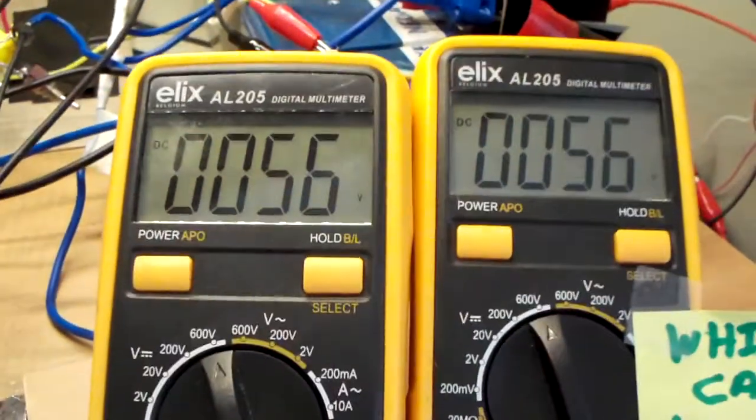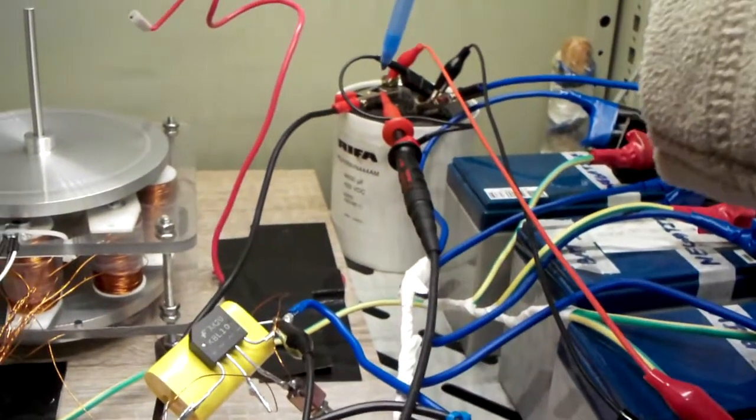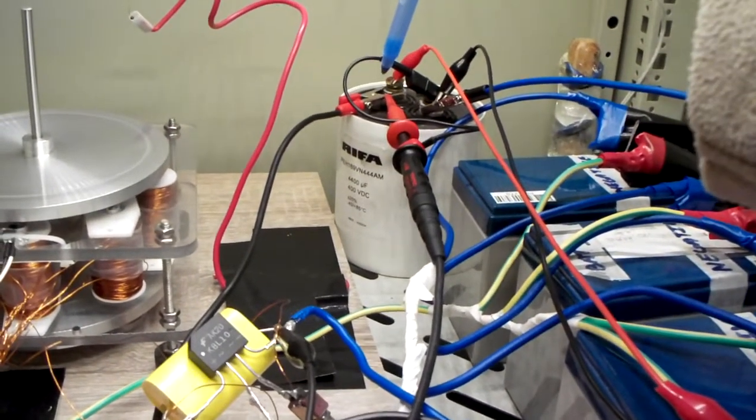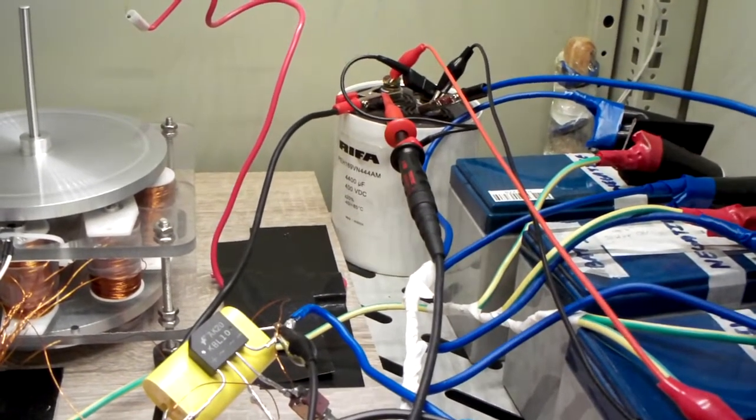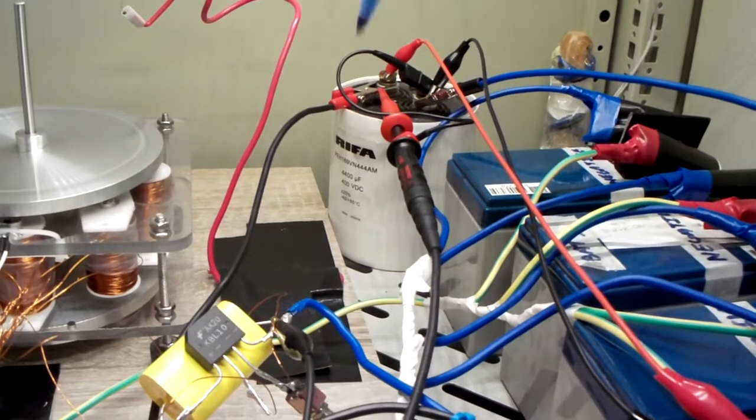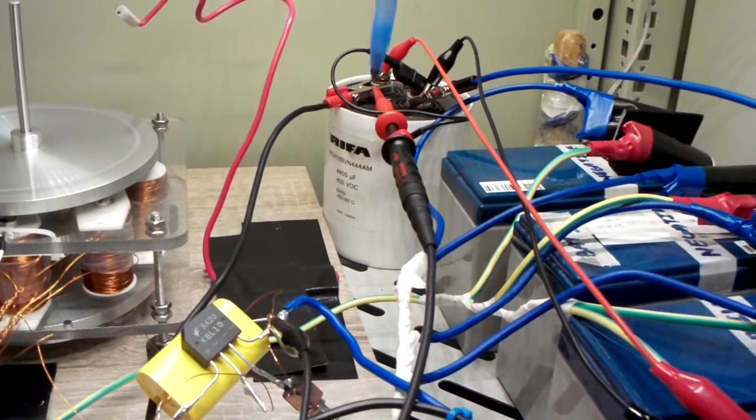So in the circuit we are now running, the capacitor, the big one over there, is 400 volts, 4400 microfarads. But you have to watch out with this one because there is a lot of energy stored inside. So you need to be very careful when using those.